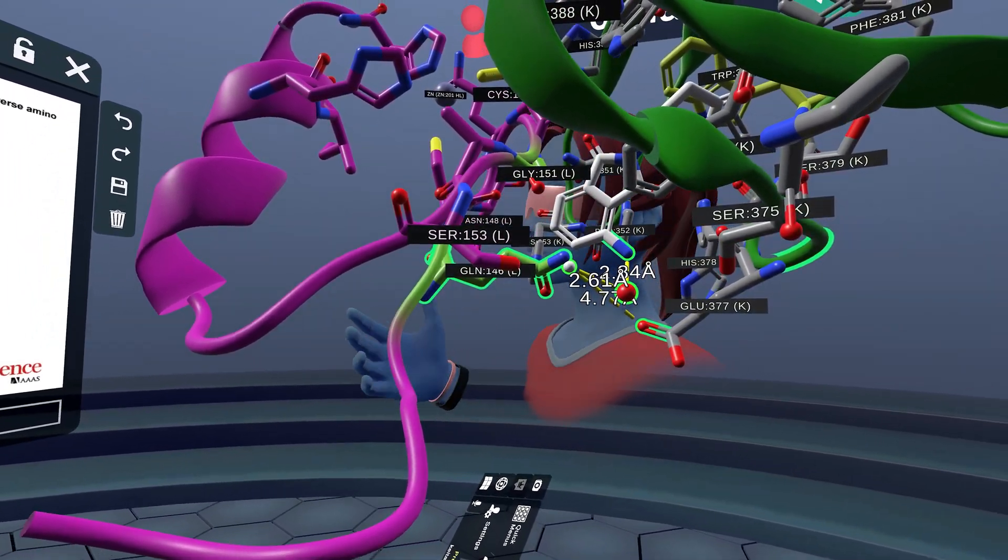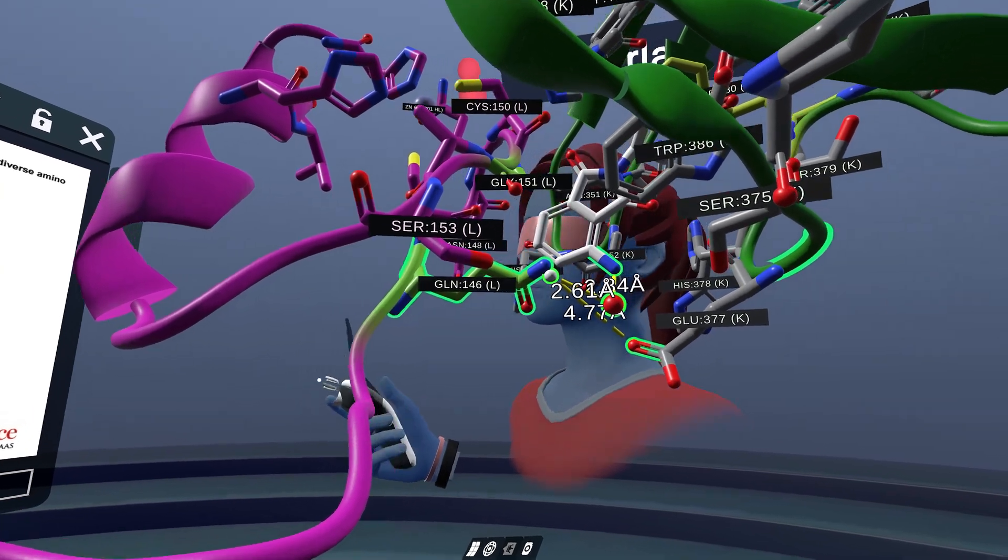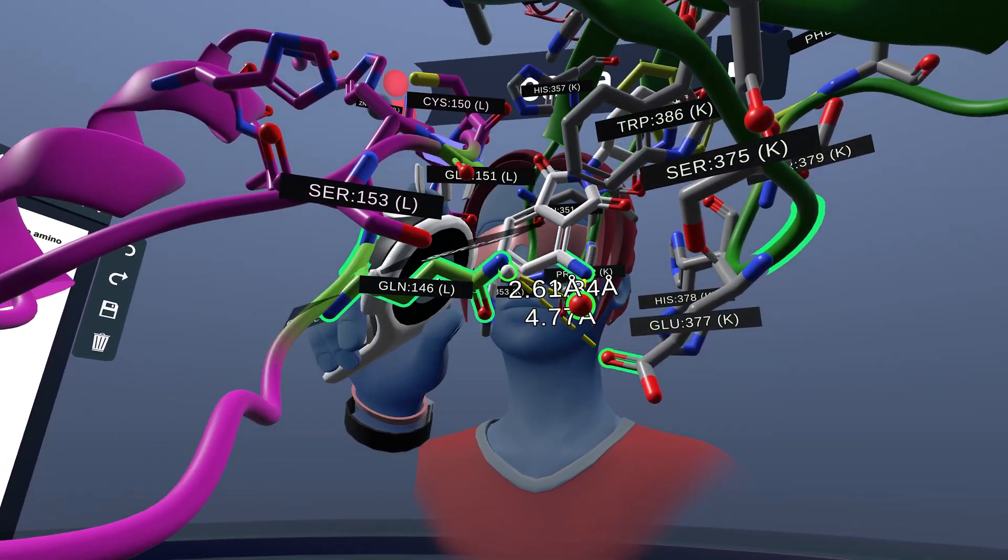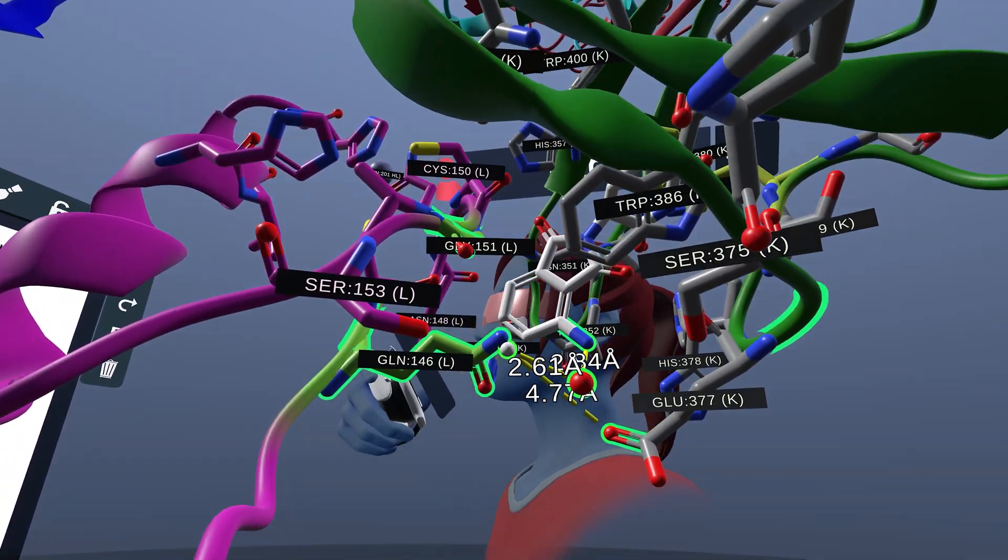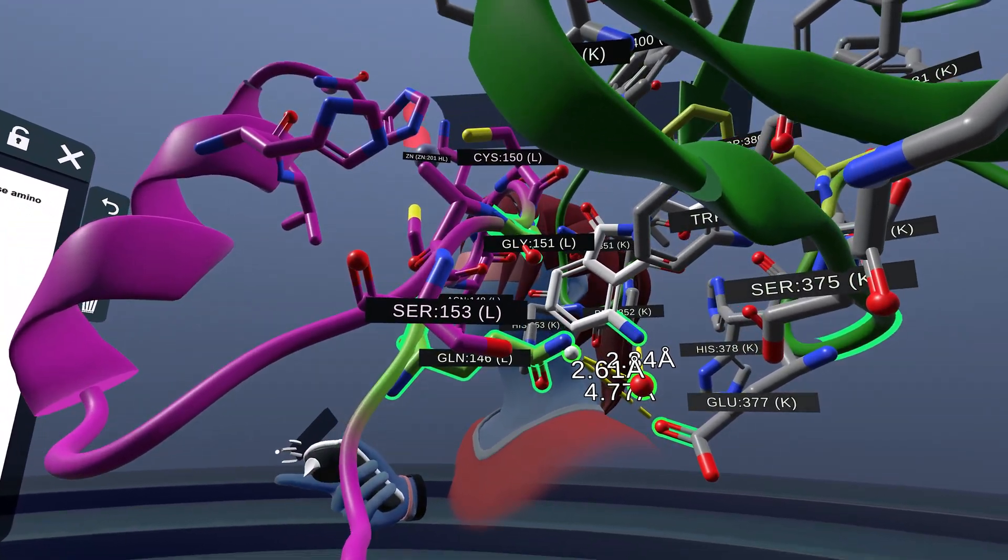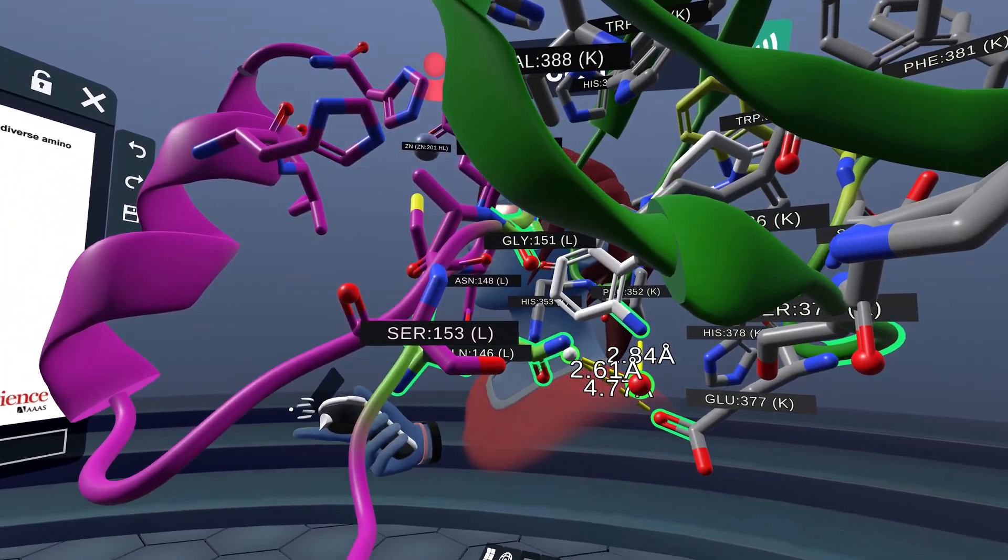Additionally, the beta hairpin glycine 151 in the zinc finger, which I highlighted in green, packs against the phthalimide ring of pomalidomide.